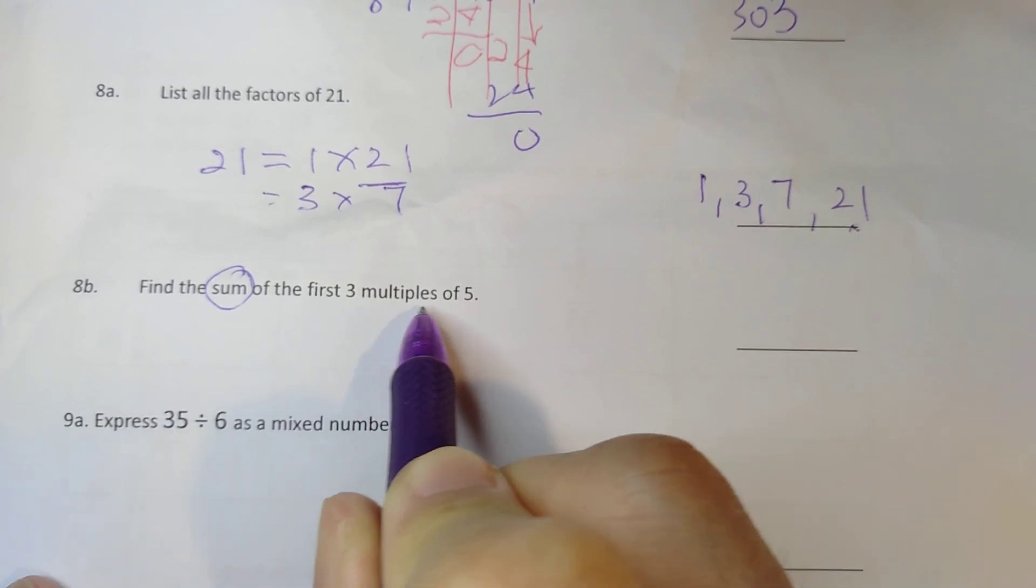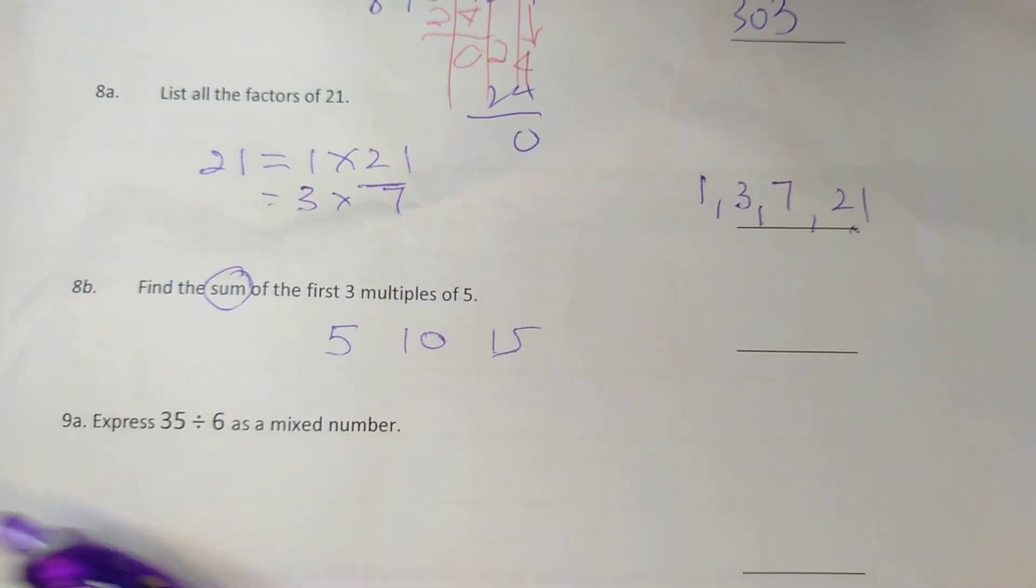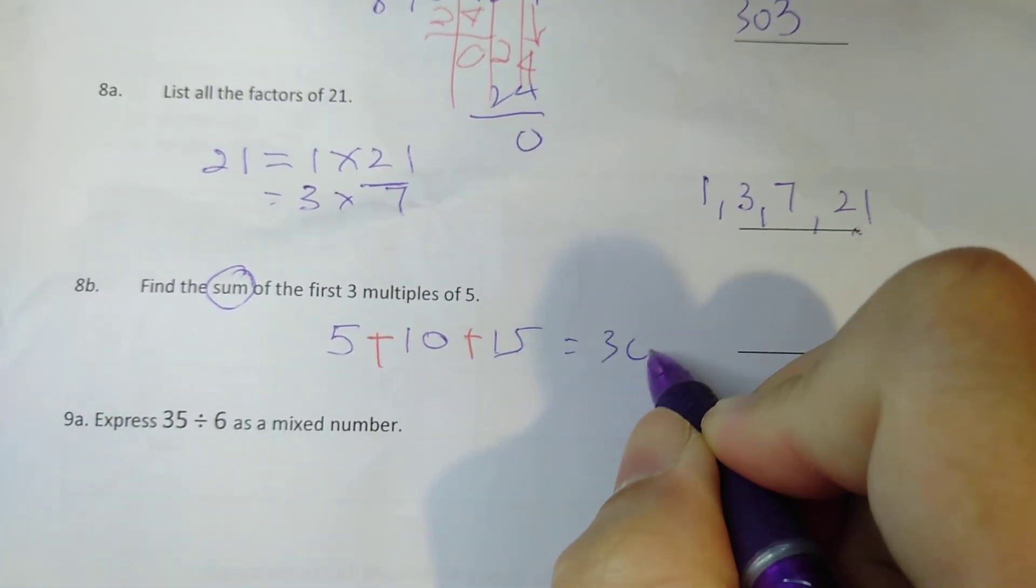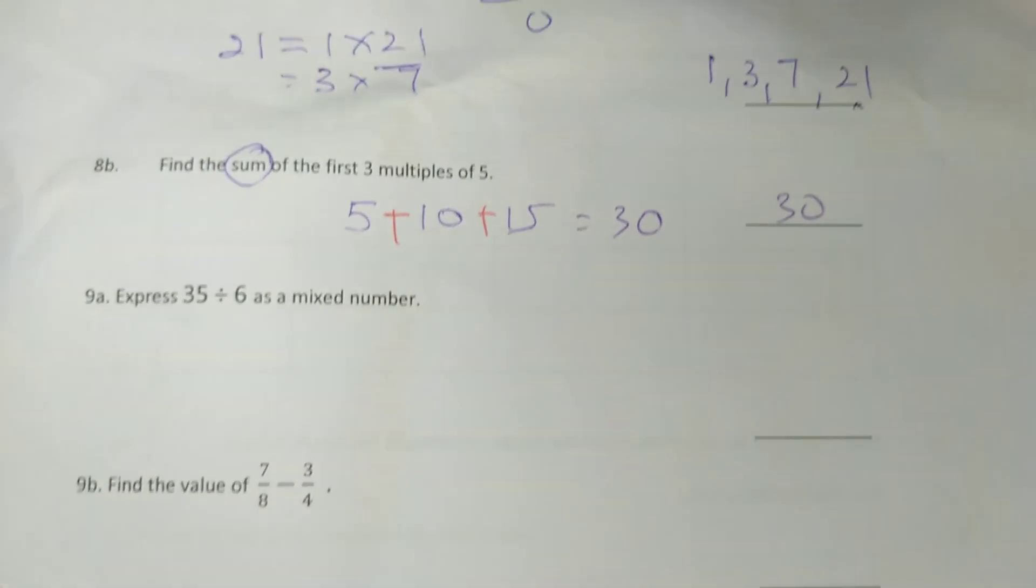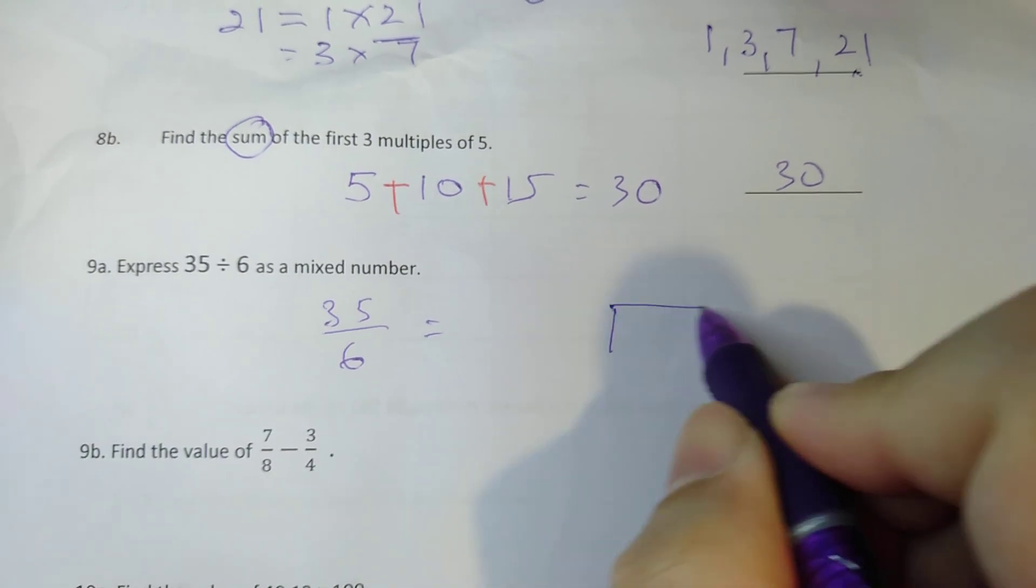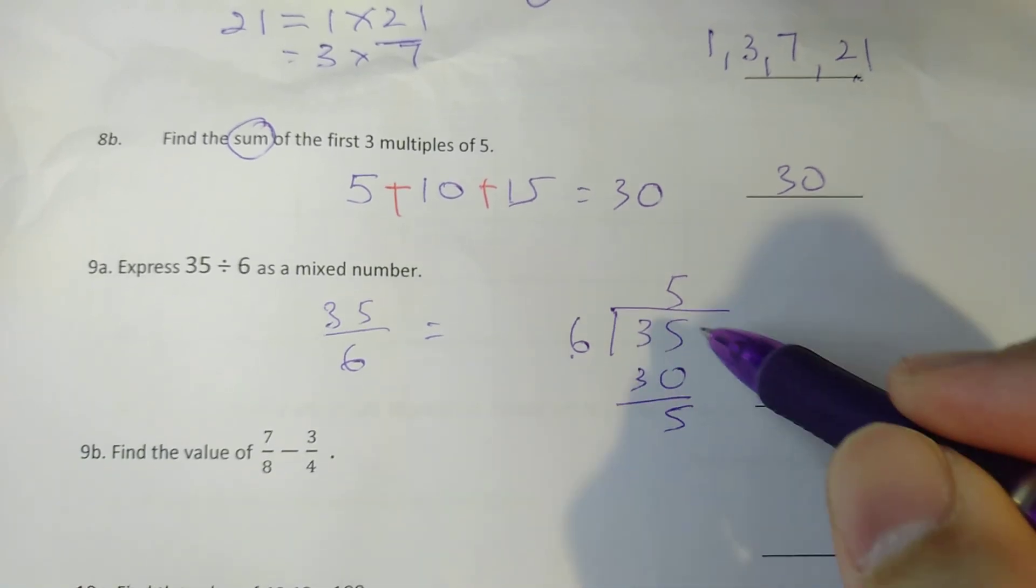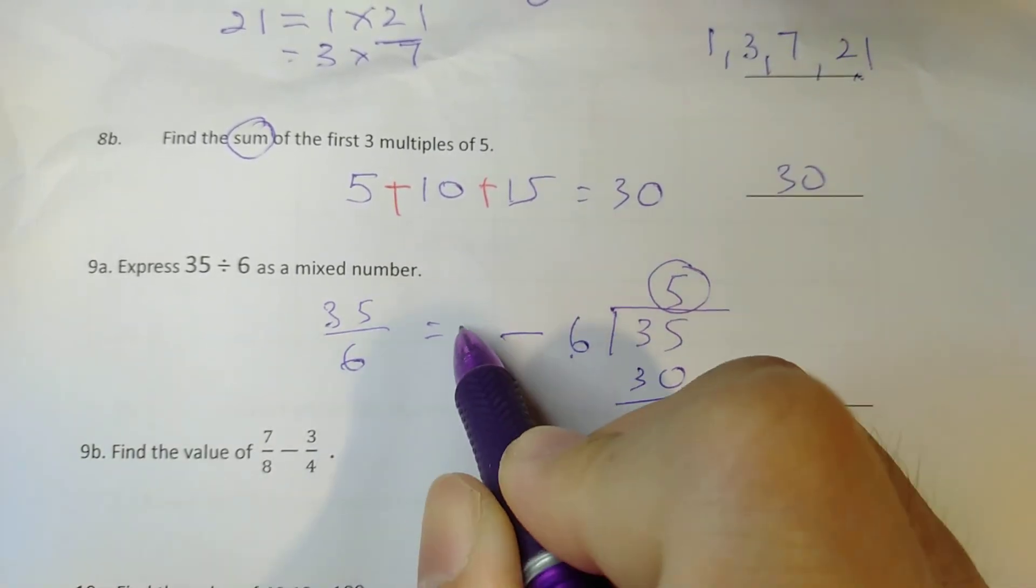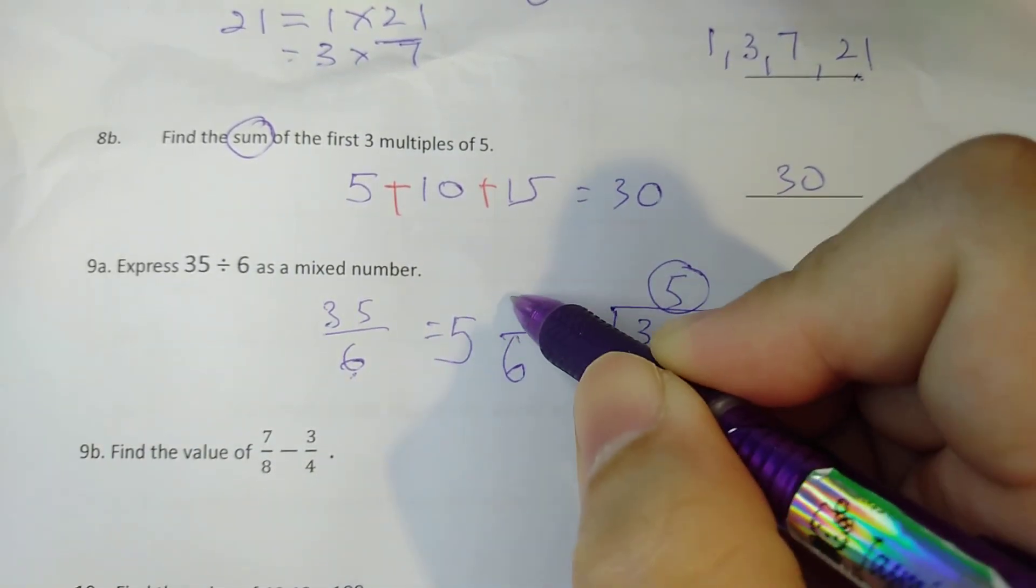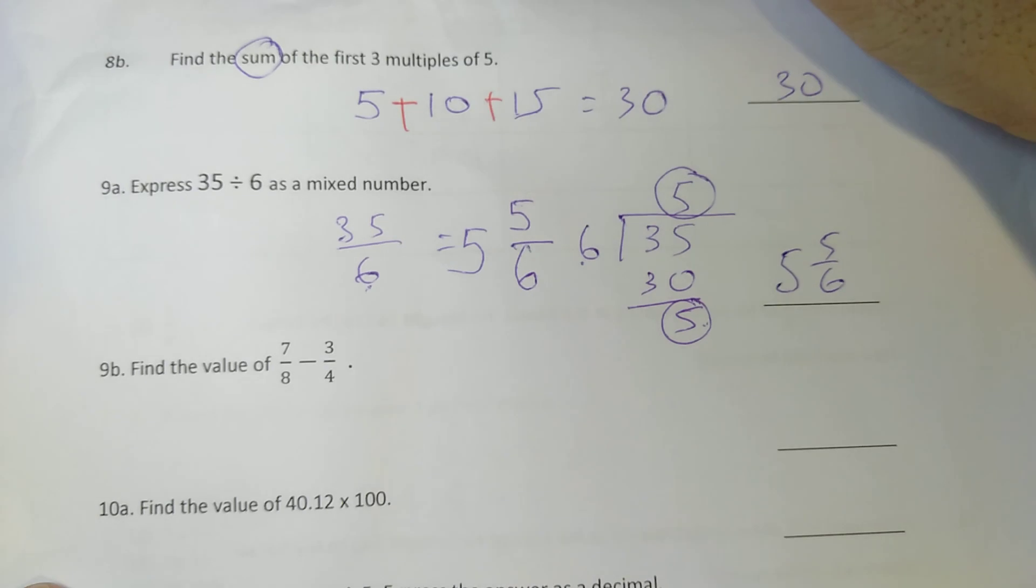Next one, find the sum of the first 3 multiples of 5. So the first 3 multiples of 5 is 5, 10, 15. Sum means you add them up. Just add them up. And you will have 30. So 30 is your answer for this. Express 35 divided by 6 as a mixed number. So working will look like this. 6 times 5, 30. Alright, so remember, we talk about this. This is your 5 whole. 6 is the denominator. 6 will remain here. This is the remainder. Remainder goes up there. So 5 whole, 5, 6.